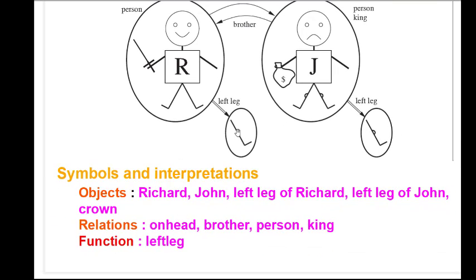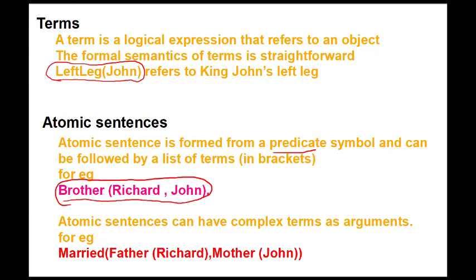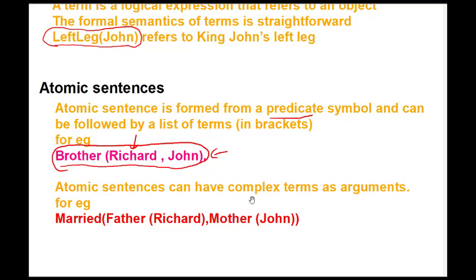The function in this case is 'left leg.' In first order logic a term is a logical expression that refers to an object — for example, 'left leg of John' refers to King John's left leg. An atomic sentence is formed from a predicate symbol followed by a list of terms in brackets. First order logic is also called predicate logic. For example, the sentence 'Brother(Richard, John)' reads as 'Richard is the brother of John.'